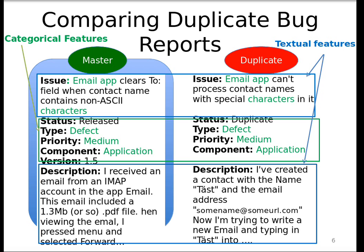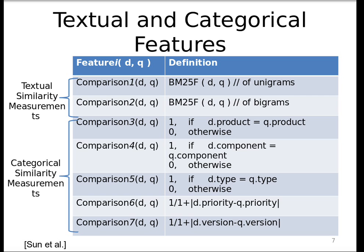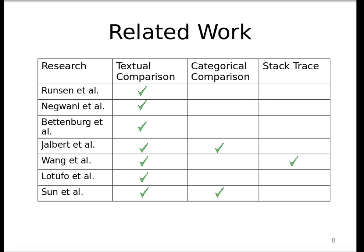Prior work tends to compare duplicate bug reports by looking at categorical features — things like status, type, priority, component, and version — while other research focuses on text: the subject, description, and words, using text differencing to compare them. Some approaches use both; for instance, Sun et al. use both textual similarity and categorical similarity — they use BM25F to measure similarity between texts and also compare categorical features like priority. Some researchers even use stack traces, which is a good example of relying on the context of bug reports.